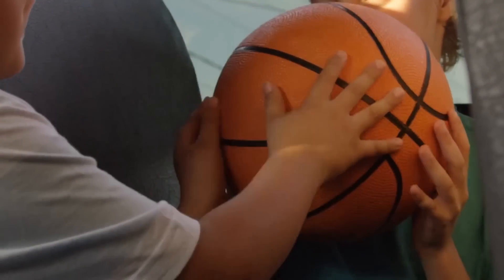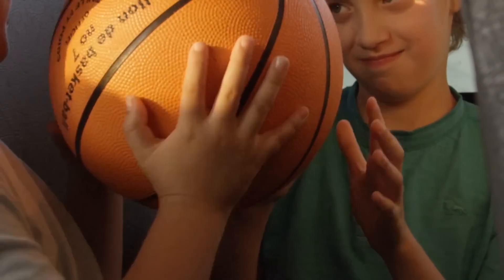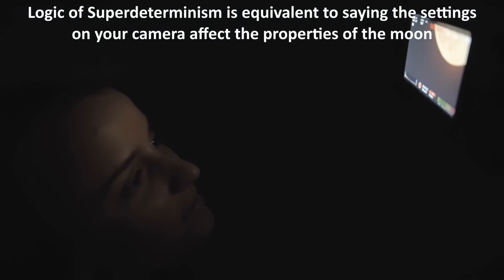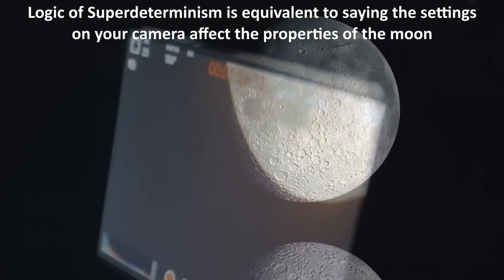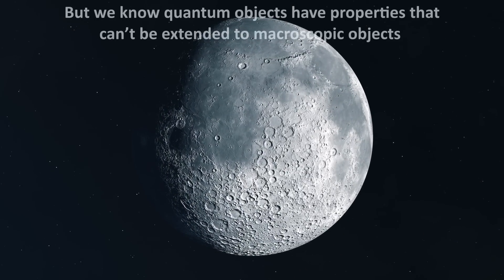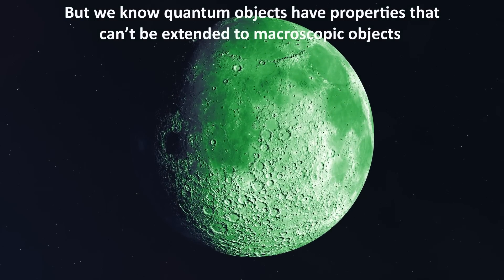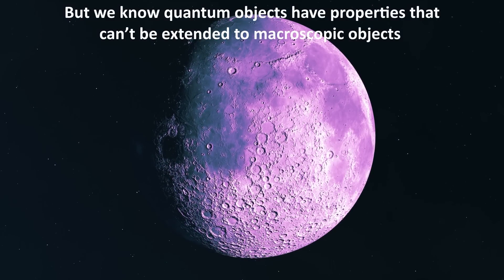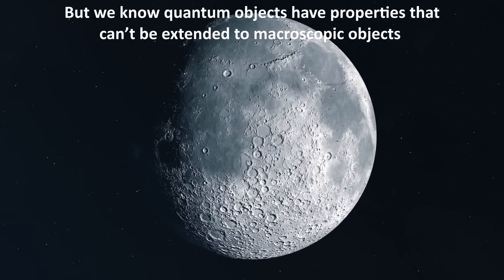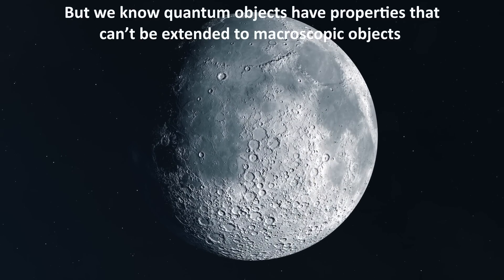Some object to super-determinism because its logic, if extended to macroscopic objects, would be the equivalent of saying that if you take a photograph of the moon, your camera affects the properties of the moon. But quantum objects are not the moon. We know quantum objects have seemingly weird properties that can't be extended to macroscopic objects. So this objection appears to be one due to personal incredulity. But there are some legitimate problems.